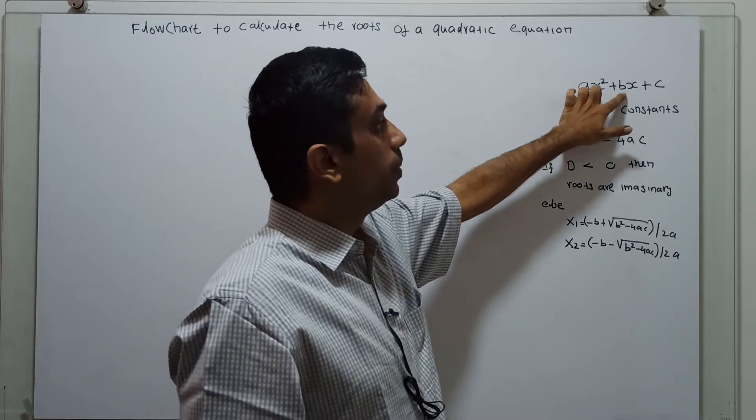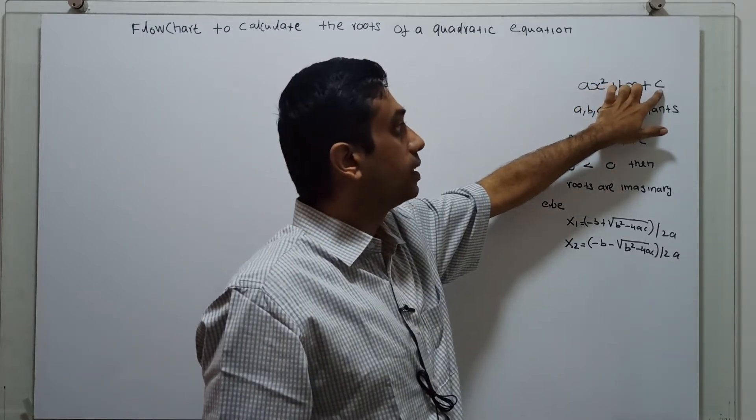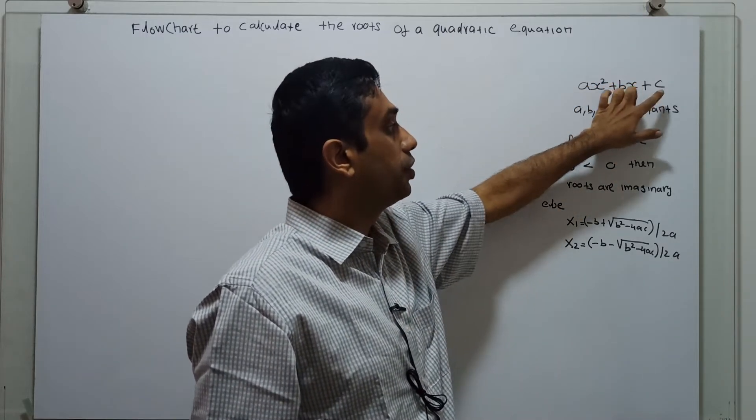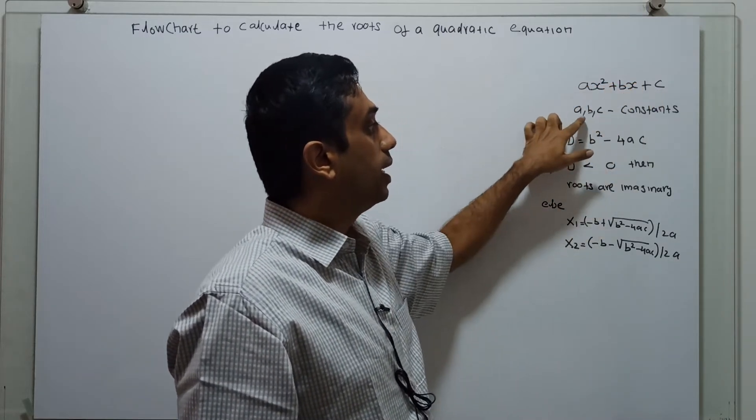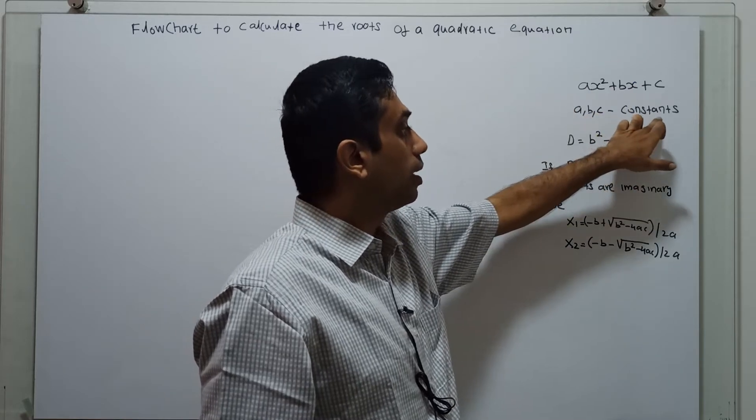ax squared plus bx plus c is the quadratic equation. a, b, c are constants.